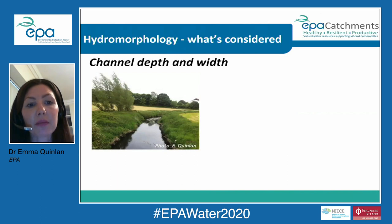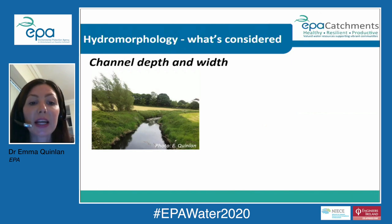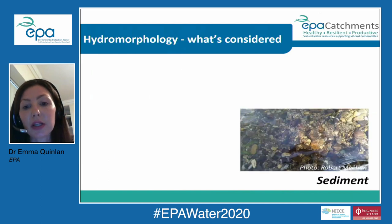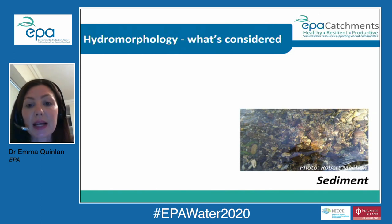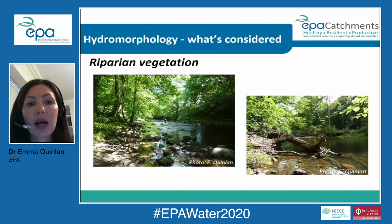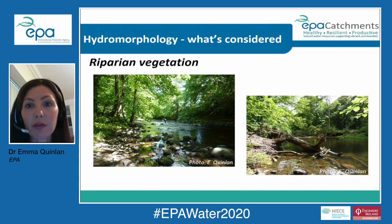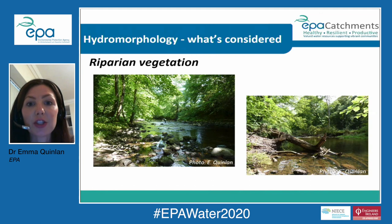We also consider channel depth and width — these are your channel dimensions — and activities like dredging can impact those dimensions and in turn impact flow and sediment regimes. We consider sediment distribution: boulders, cobbles, sand, silt and clay. We also look at riparian vegetation; you can see an example here of native trees coming right down to the riverbank, interacting with the channel, stabilizing the banks, and providing shade and habitat.